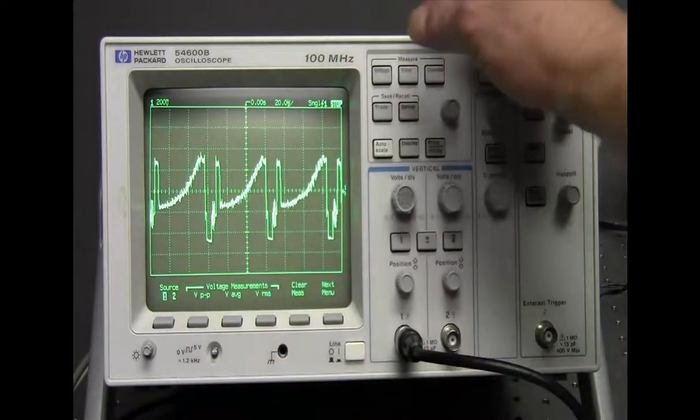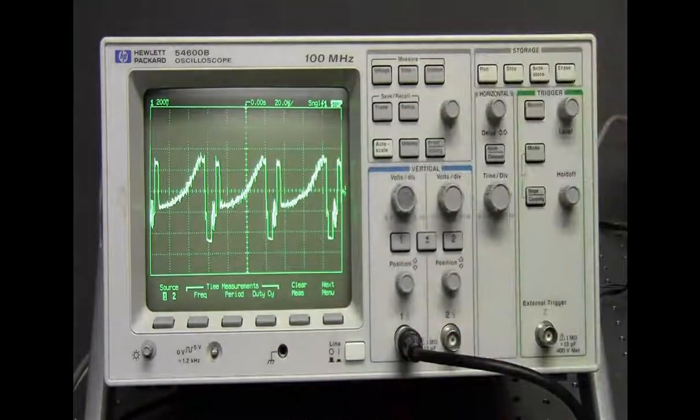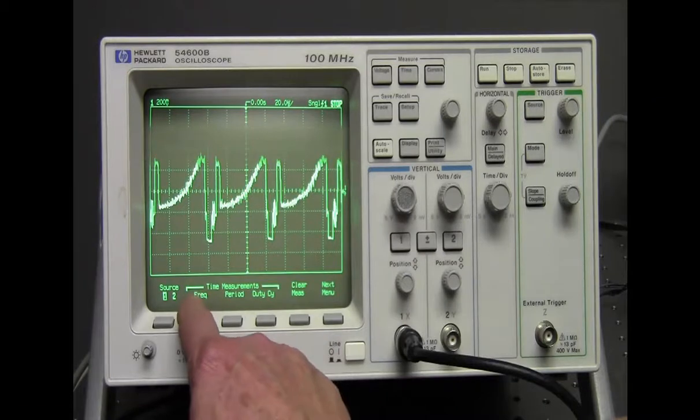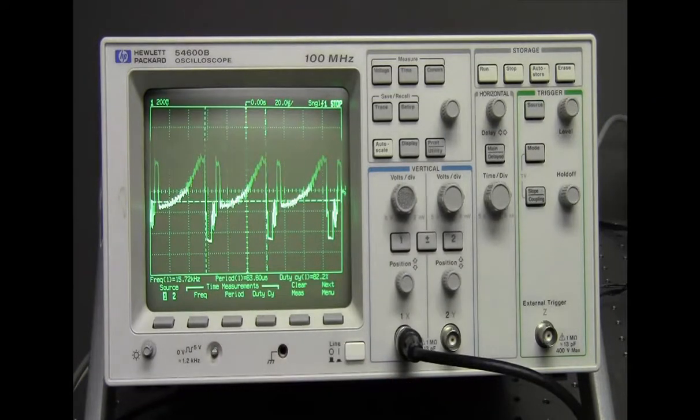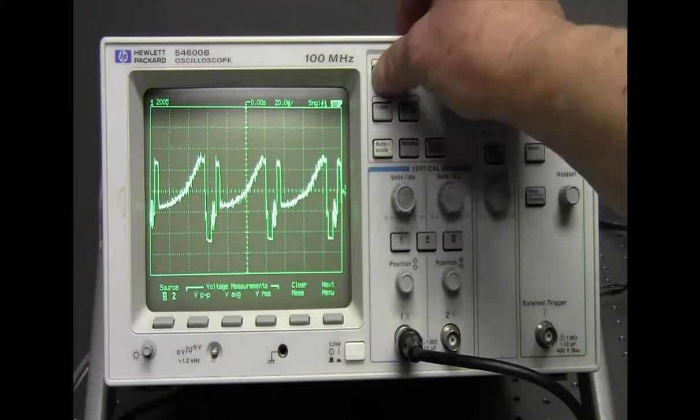I'll clear that. There's a time measurement: frequency, period, and duty cycle. If I hit the soft keys I get the three measurements for the time measures. I'll also clear that and go back to voltage.